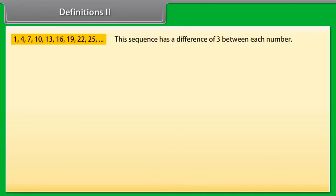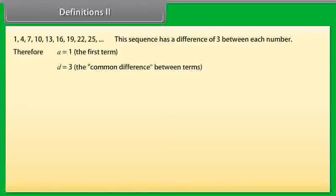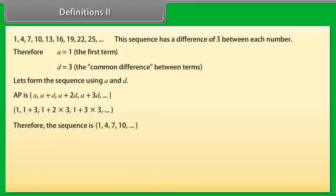Definitions 2. Look at this example now. We can see that this sequence has a difference of 3 between each number. Therefore, A is equal to 1, the first term, and D is equal to 3, the common difference between terms. Let us form this sequence using A and D. We know AP is equal to A, A+D, A+2D, A+3D and so on. Substituting the value of A and D, we get 1, 1+3, 1+2×3, 1+3×3 and so on, which gives the sequence 1, 4, 7, 10 and so on.